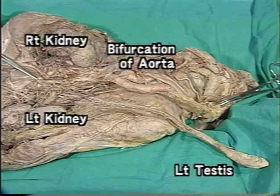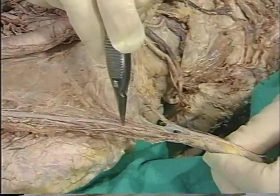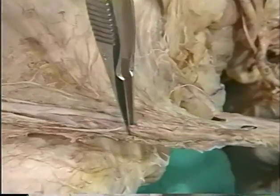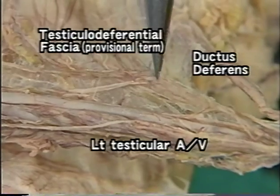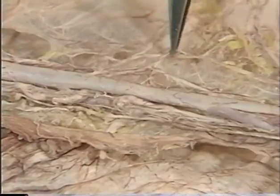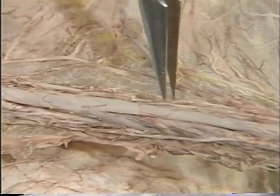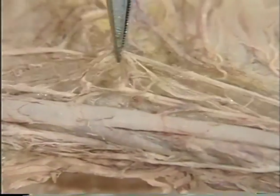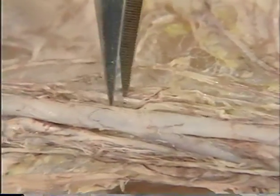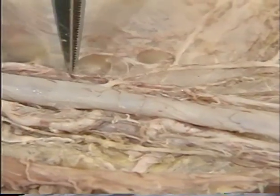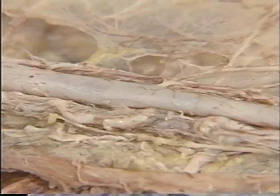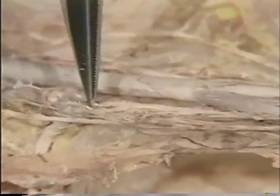Now we will consider the lymphatics of the testis. Due to the high origin of the testis, its vessels travel a great distance. After dissecting the fascia between the testicular vessels and ductus deferens, we trace the lymphatics from the left testis upwards to the level of the aorta and inferior vena cava. Medial to the relatively thick vein, we trace a lymph vessel upwards. Lateral to this vein, along a serpentine-like artery, we trace lymphatics upwards.